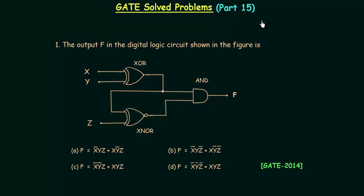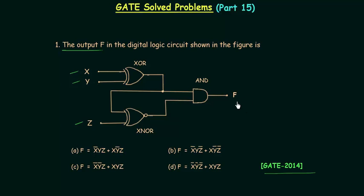In this part I will solve two problems from the GATE 2014 paper. In the first problem we need to determine the output f in the digital logic circuit shown in the figure. The circuit has x, y and z as inputs and f is the output, and we have to find out the minimized expression of f.